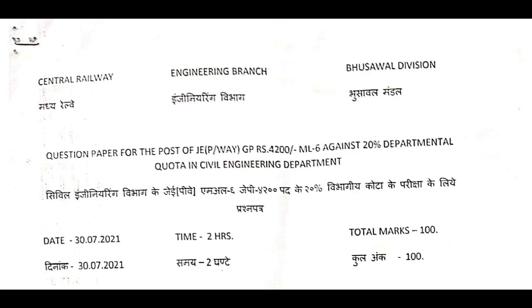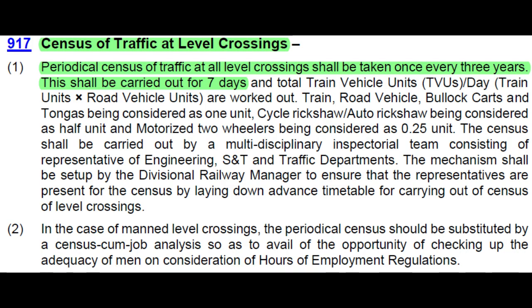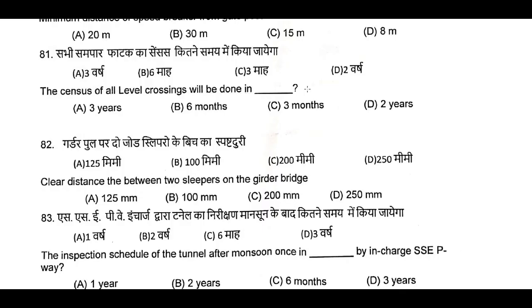Question Number 81: The census of all level crossings shall be done in dash — that is, once in 3 years, for a period of 7 days. Question Number 81, A is the correct answer: 3 years.